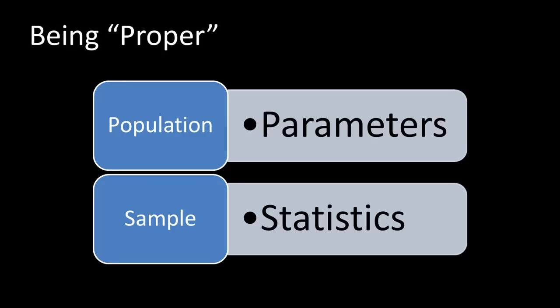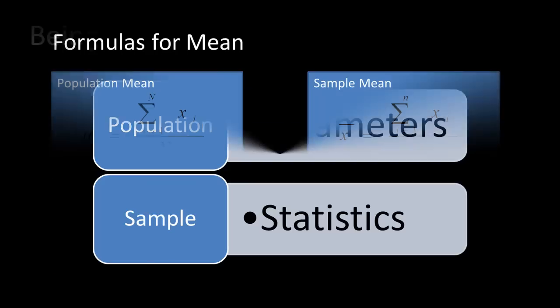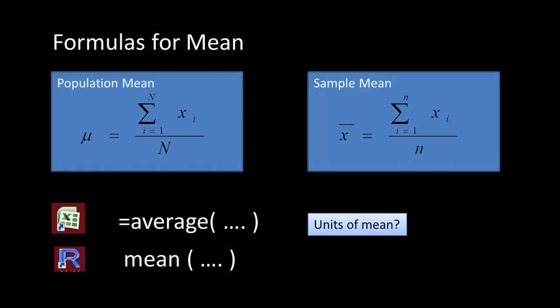Correct use of terminology: for population mean, you sum across the entire population. The Greek symbol mu is used to refer to the population mean, calculated as the sum from i=1 to N (uppercase N, the population size) of x_i, divided by N. Uppercase N refers to the size of the population.